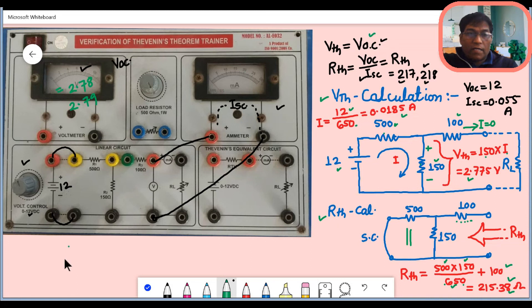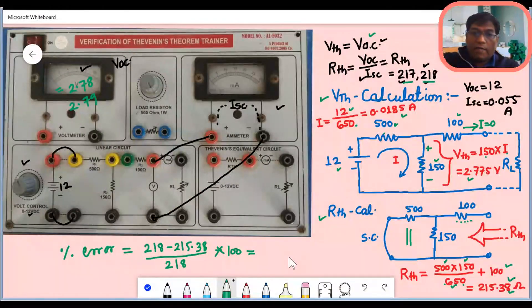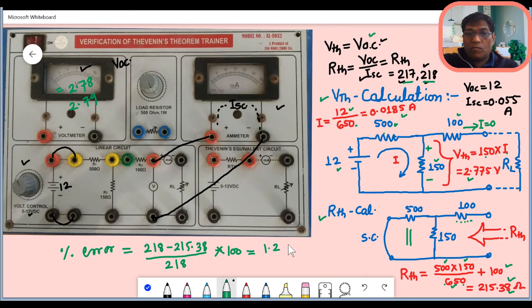Now you have to calculate percentage error. This percentage error will be the difference between these values. Suppose your reading came 218, then percentage error will be 218 minus 215.38 which is calculated, divided by 218 and into 100. Whatever value is coming out, that is your percentage error. How much error came in both, you have to calculate. Error is 1.2 percent.